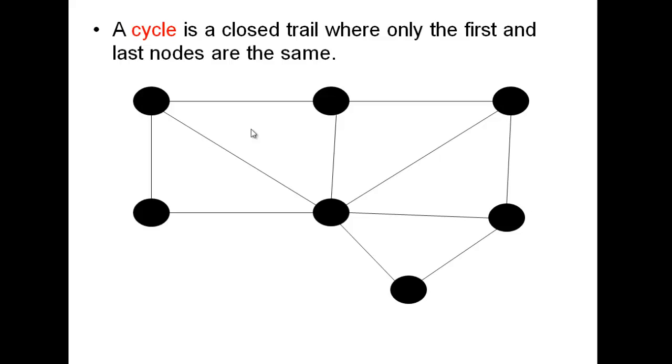A cycle is a closed trail where only the first and last nodes are the same. So the only repeated nodes are the first and the last ones.